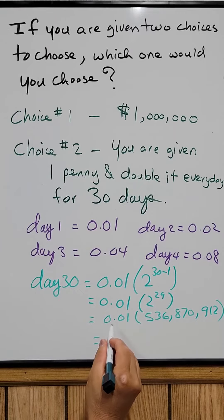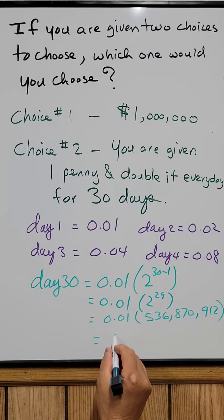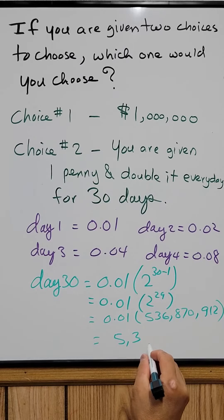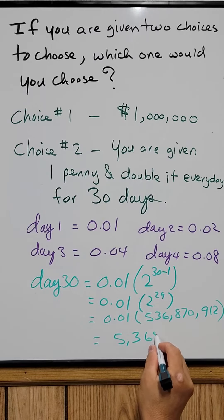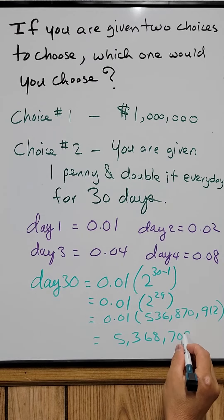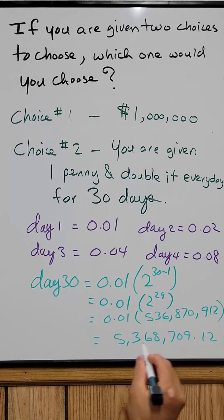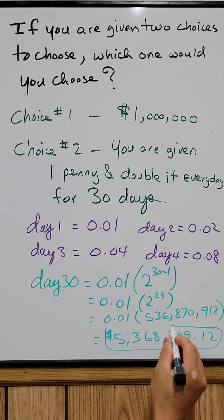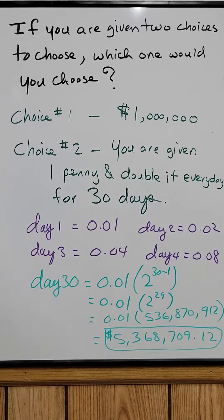And you multiply by 0.01 and come out to $5,368,709.12. So as you can see, choice number two would be a better choice. You get $5,368,709.12 instead of one million dollars.